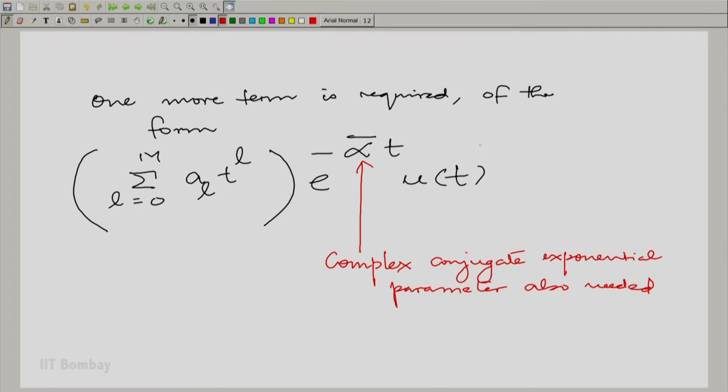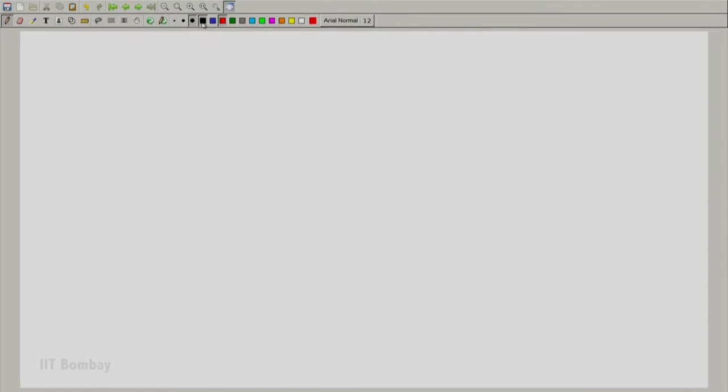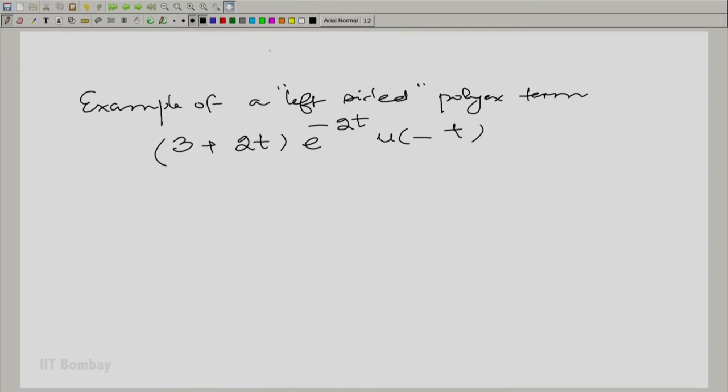Also, here we have taken what is called a right sided function or signal. It could also be left sided. An example of a left sided poly ex term: this u of minus t here is non-zero to the left of a certain point. Here, it is t equal to 0 and therefore left sided.